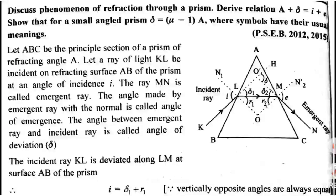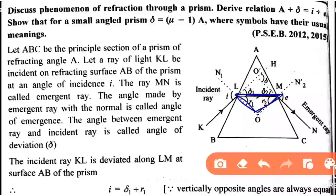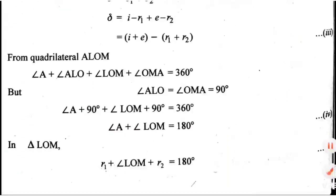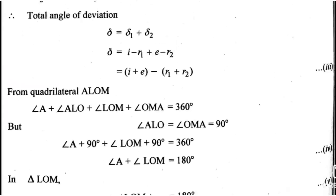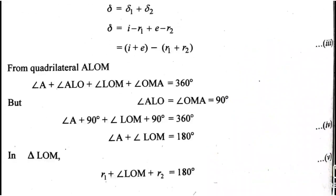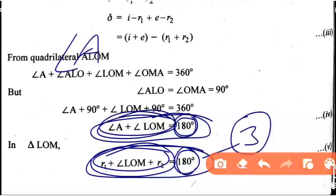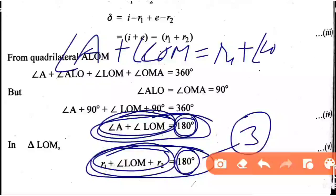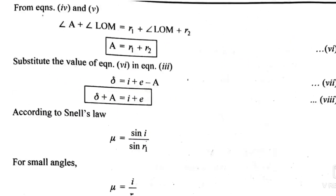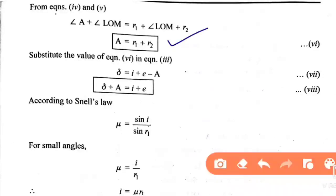Now we take triangle LOM. The sum of 3 angles of a triangle equals 180 degrees, so r1 + r2 + angle O = 180 degrees. Using the result A + O = 180, we get angle O = 180 - A. Substituting back: r1 + r2 = A. This is equation number 6.